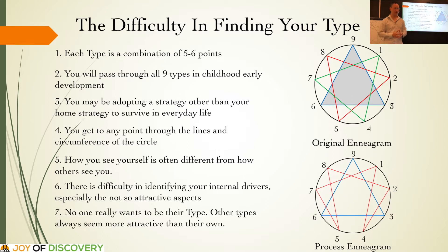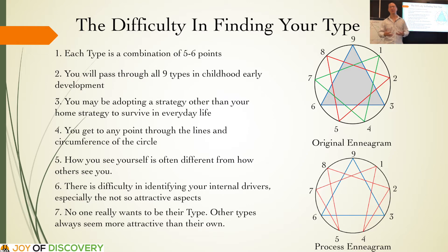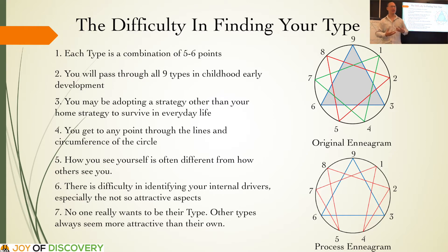The final point — number seven — is that no one really wants to be their type. You look through all nine different types and you're going to find other types that are more attractive to you. Because you've lived with yourself your whole life and know your weaknesses, you may want to be another type that seems stronger, more intelligent, more controlled, more emotional, more passionate, or more peace-loving. Those are all interesting aspects, but you may not want to acknowledge that as your home type.